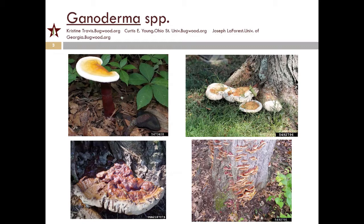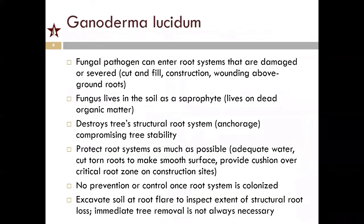This first one is a bad one — this is Ganoderma. There are a lot of different types of Ganoderma. Once this is present on the tree, there's no way you're going to be able to save it, but that doesn't mean you've got to remove the tree immediately. It does form conks, typically at the base of the tree — I've seen them up to two feet away — and it can come up the tree trunk, usually not more than about six feet. It's pretty colorful and very stiff. This is a fungal pathogen that enters root systems damaged or severed during construction or cut and fill, or from wounding above-ground roots, like when you hit them with the lawnmower.